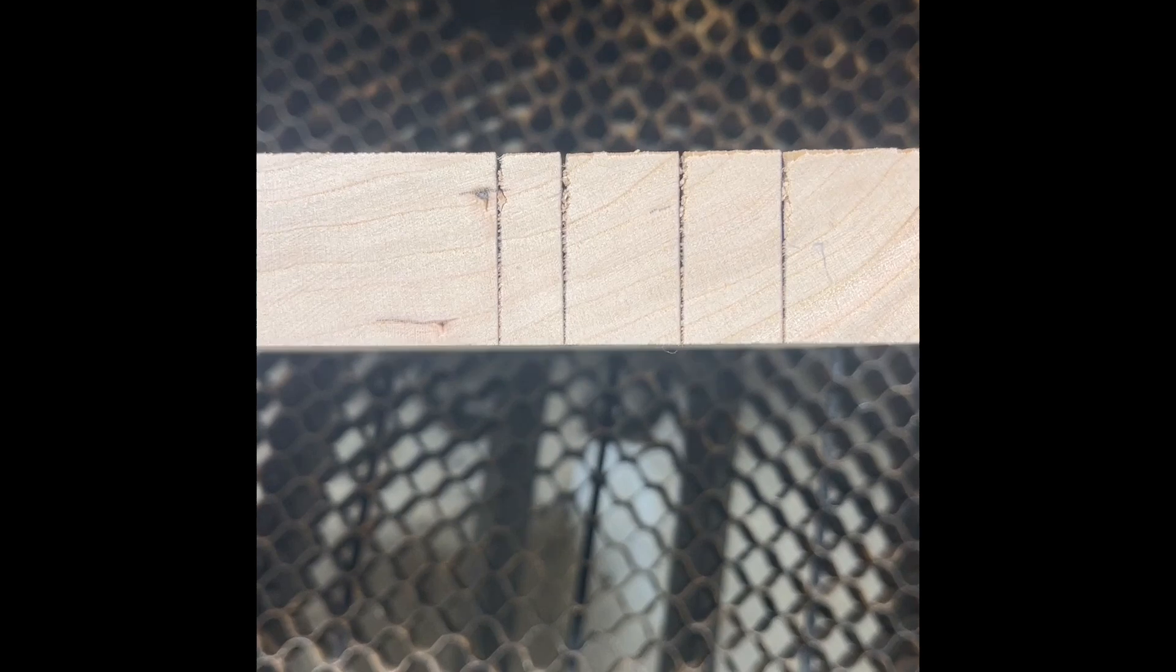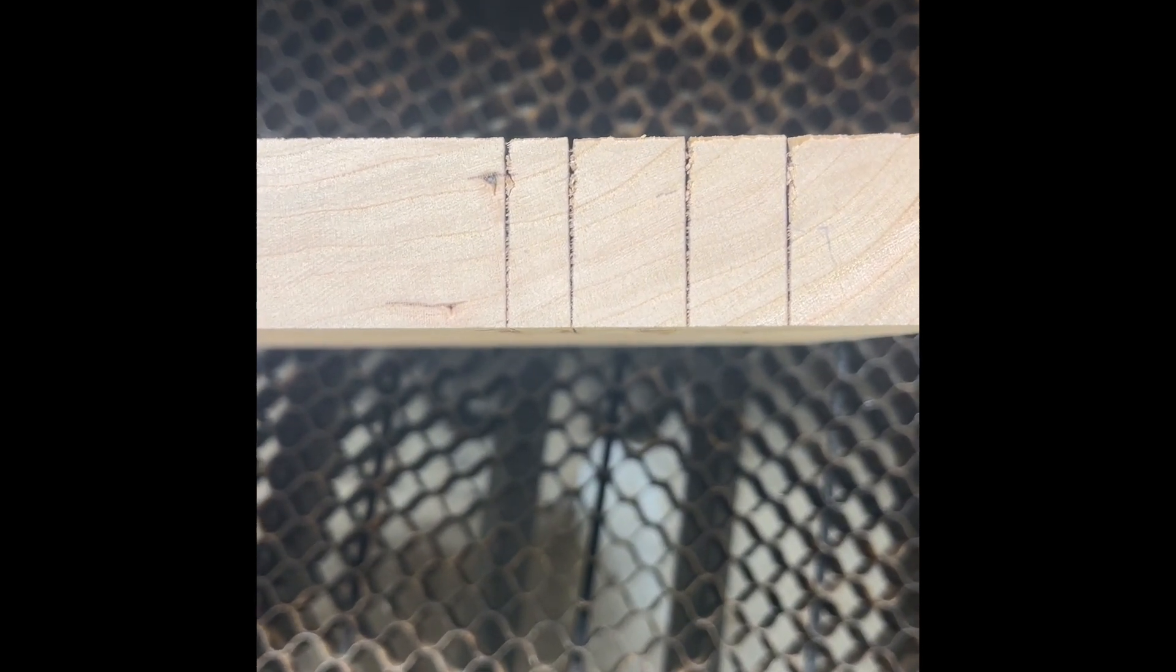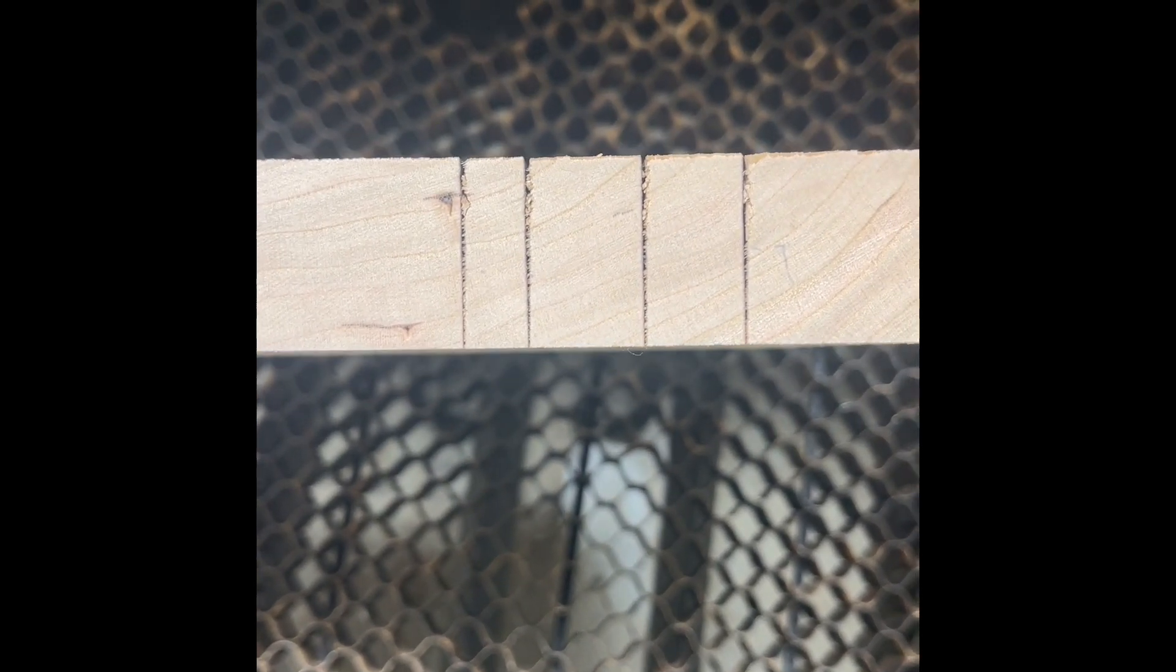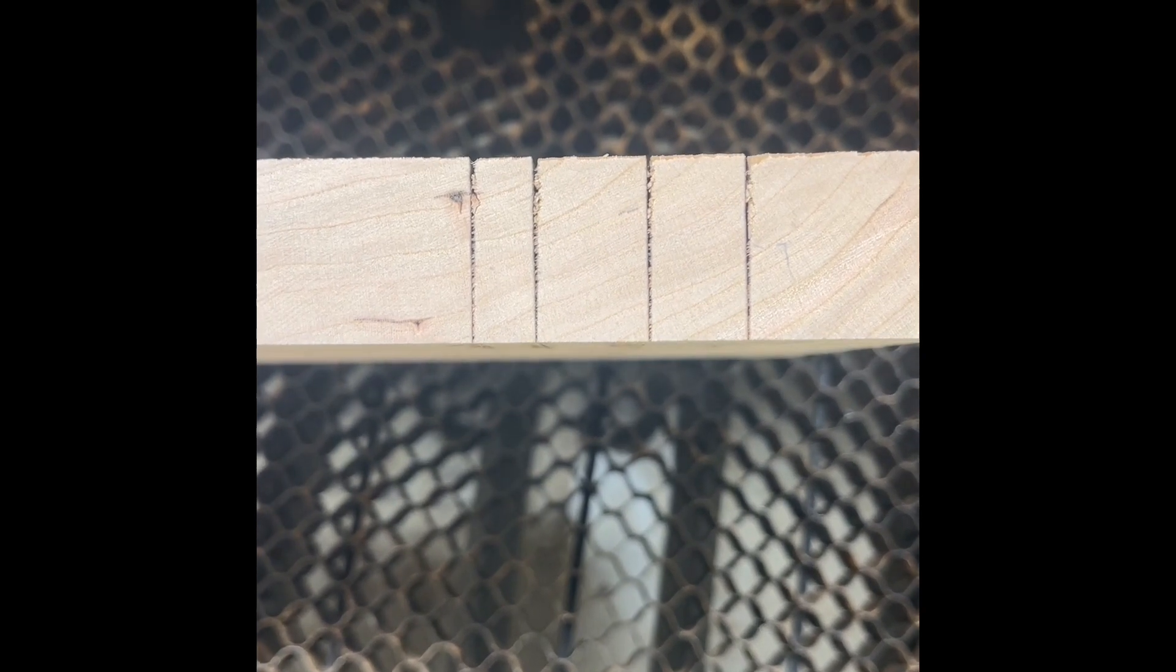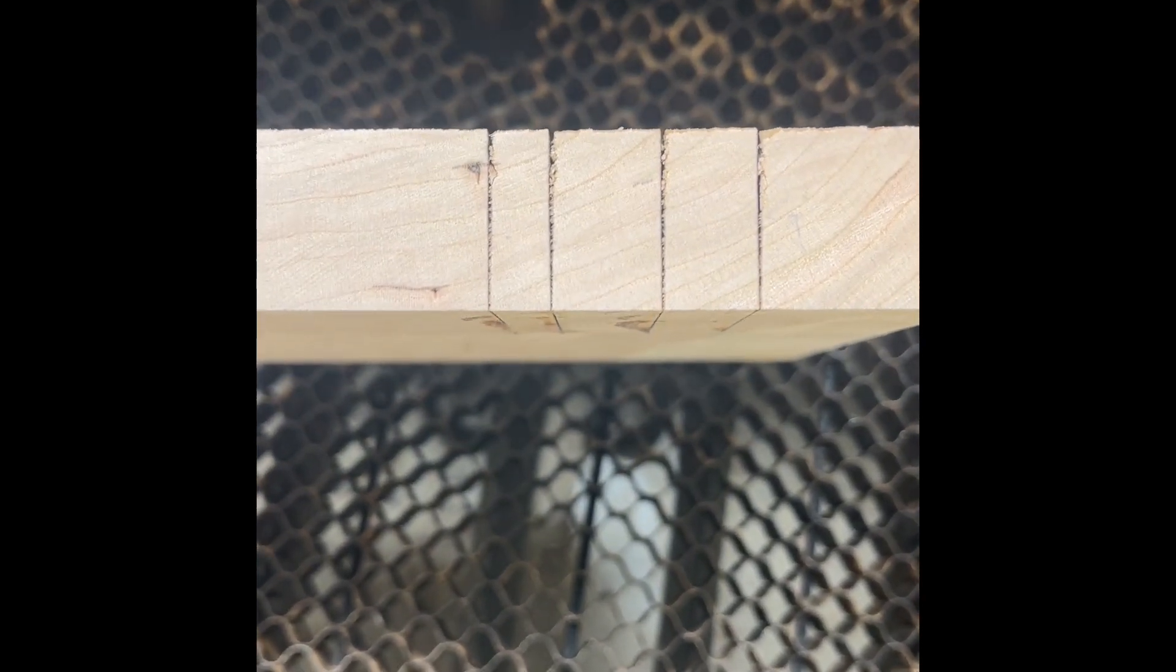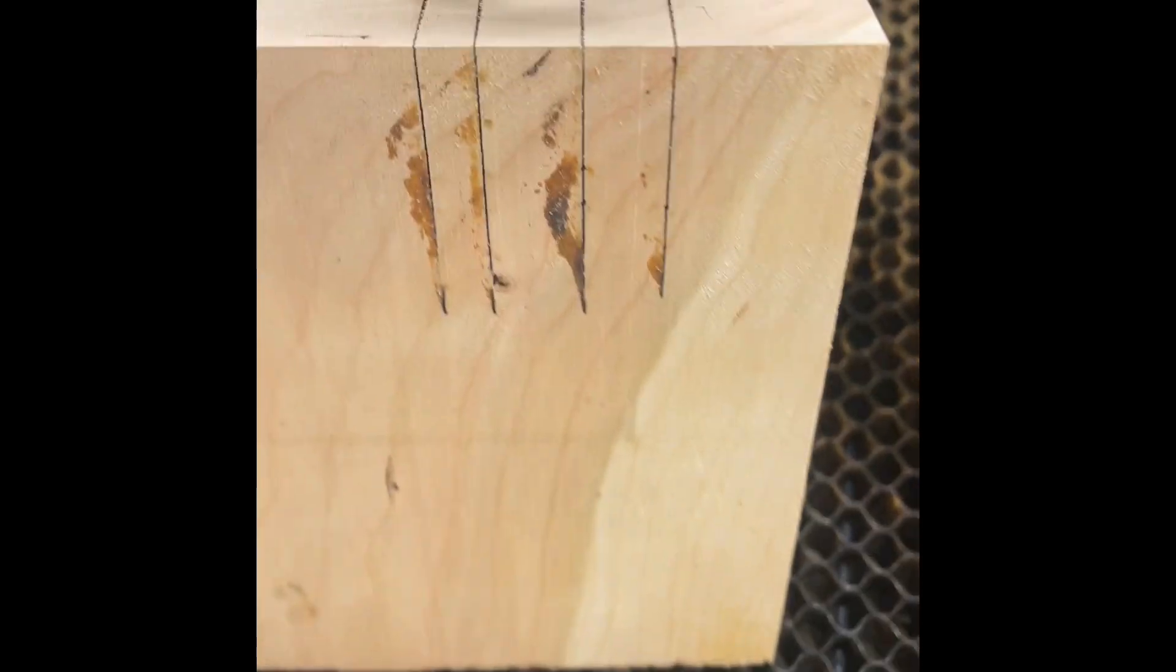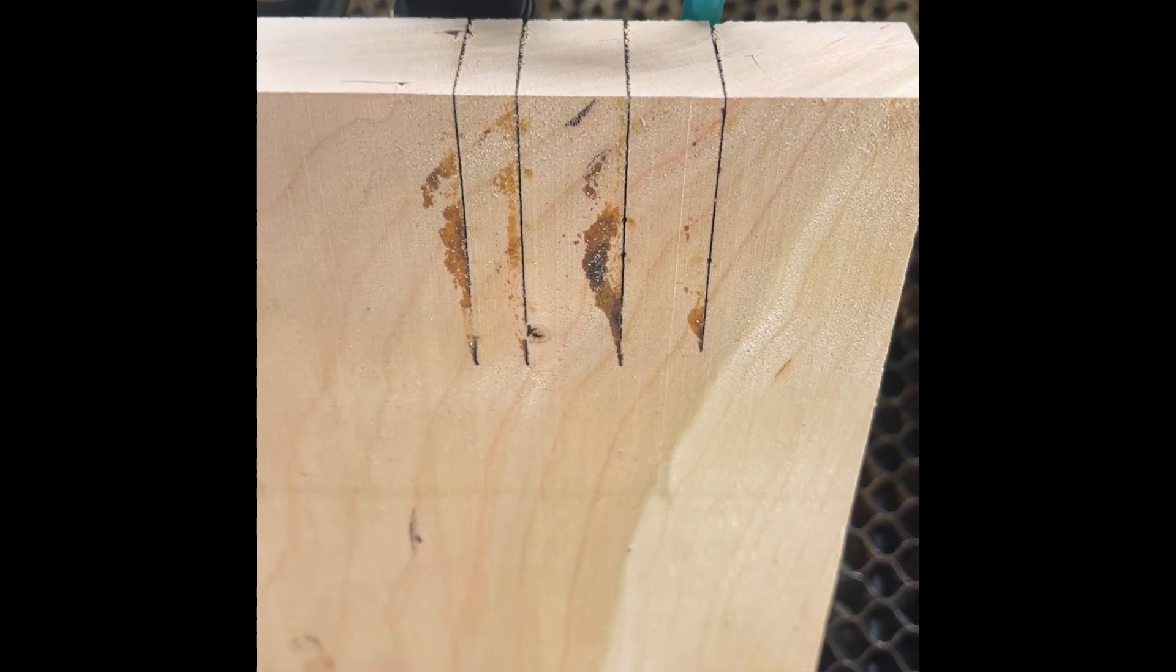I think the next experiment we'll try is just keeping the same PSI, same speed, same power, and then adjusting the focal distance. This one was set at 10.5, which is exactly what American Photonics requires. You can see the back side, they pretty much all cut through.